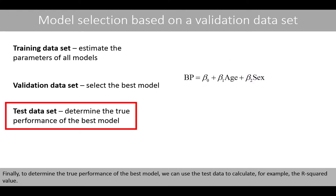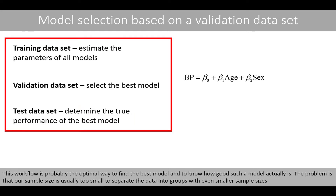Finally, to determine the true performance of the best model, we can use the test data to calculate, for example, the R-squared value. This workflow is probably the optimal way to find the best model and to know how good such a model actually is. The problem is that our sample size is usually too small to separate the data into groups with even smaller sample sizes.